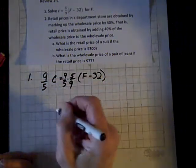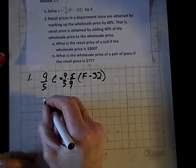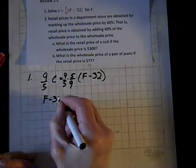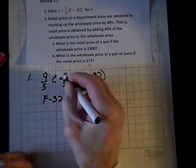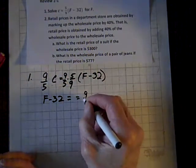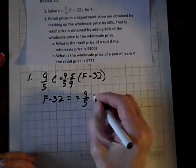And the product of reciprocals is 1, so now if I swap sides, I have F minus 32, because that product is 1, equals 9 fifths C.